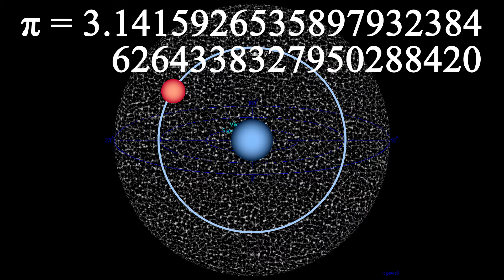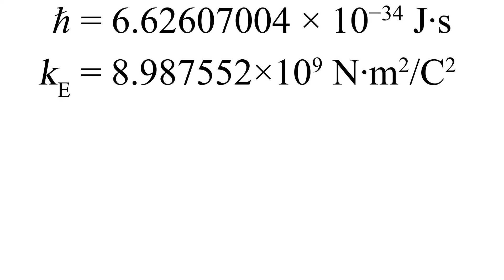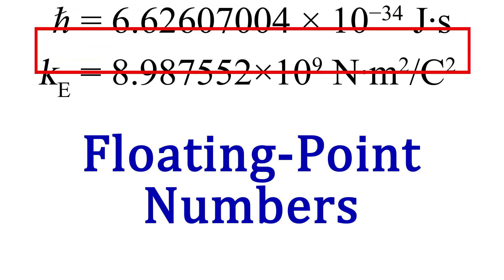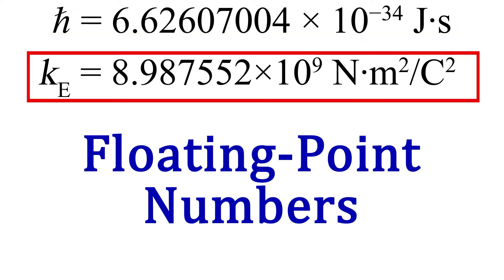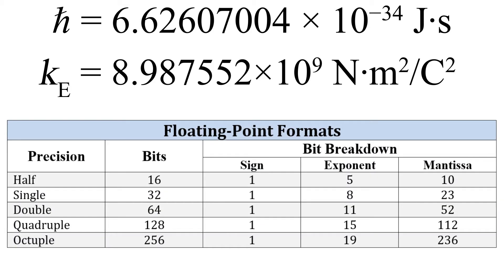That is what we aim to find out in this video. In order to encode extremely small or extremely large numbers, we use a system called floating point numbers. Because the level of precision in numbers — whether very small or very large — can vary wildly, there are different levels of floating point numbers based on how much memory is used to store them. 16-bit floating points are called half precision, 32-bit is single precision, 64-bit is double precision, and there are others as you can see in the chart.